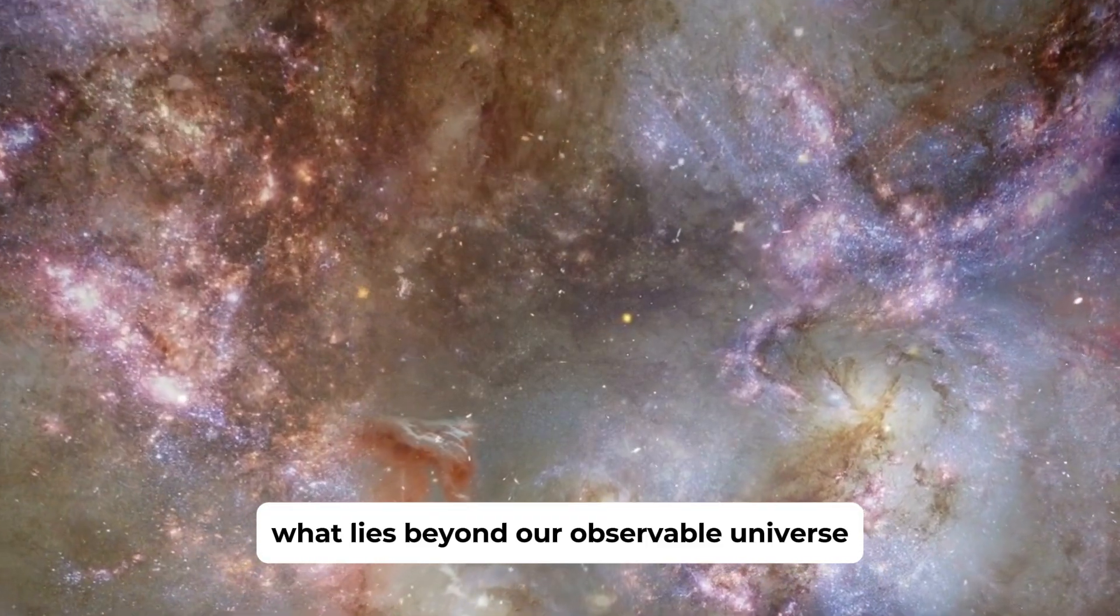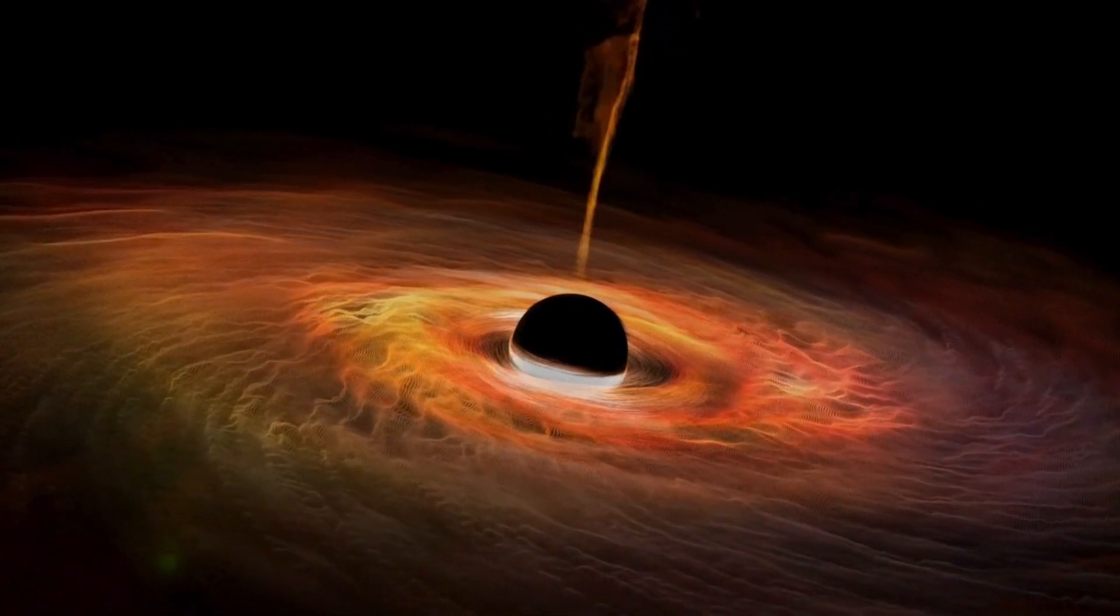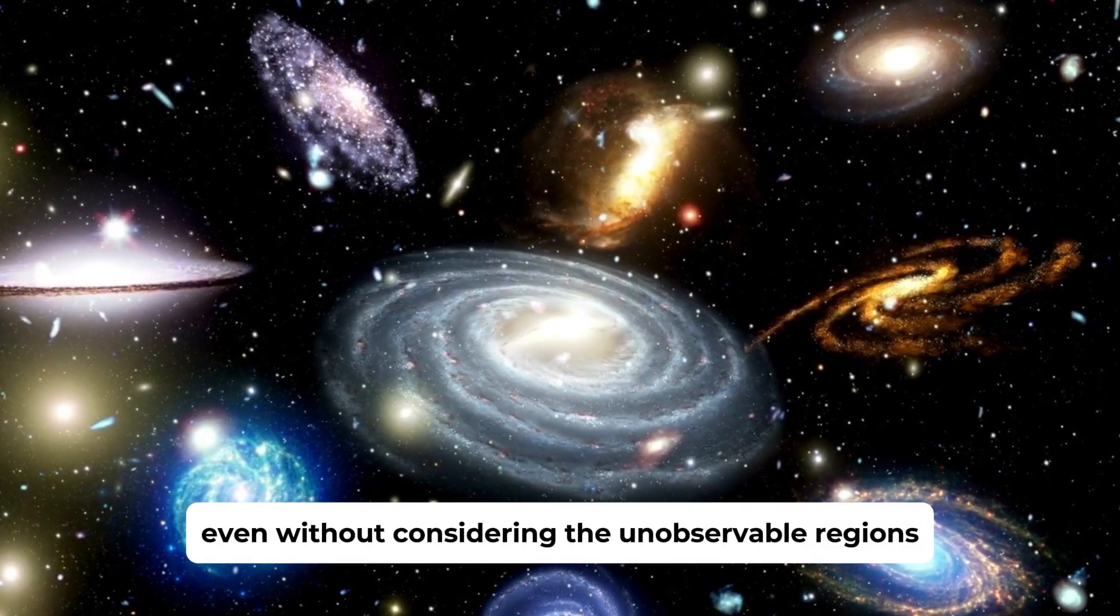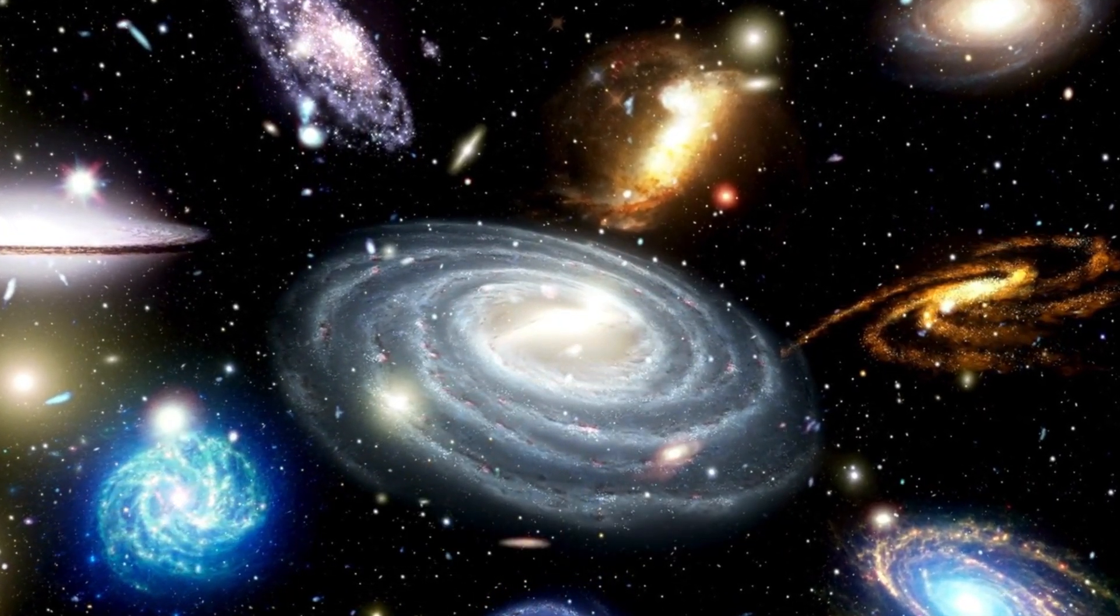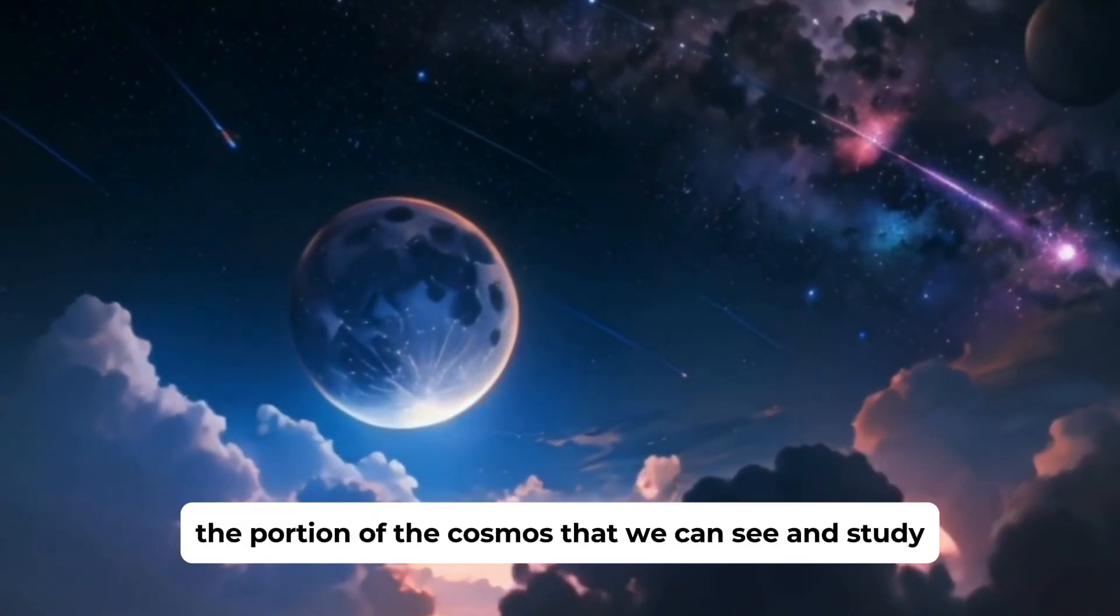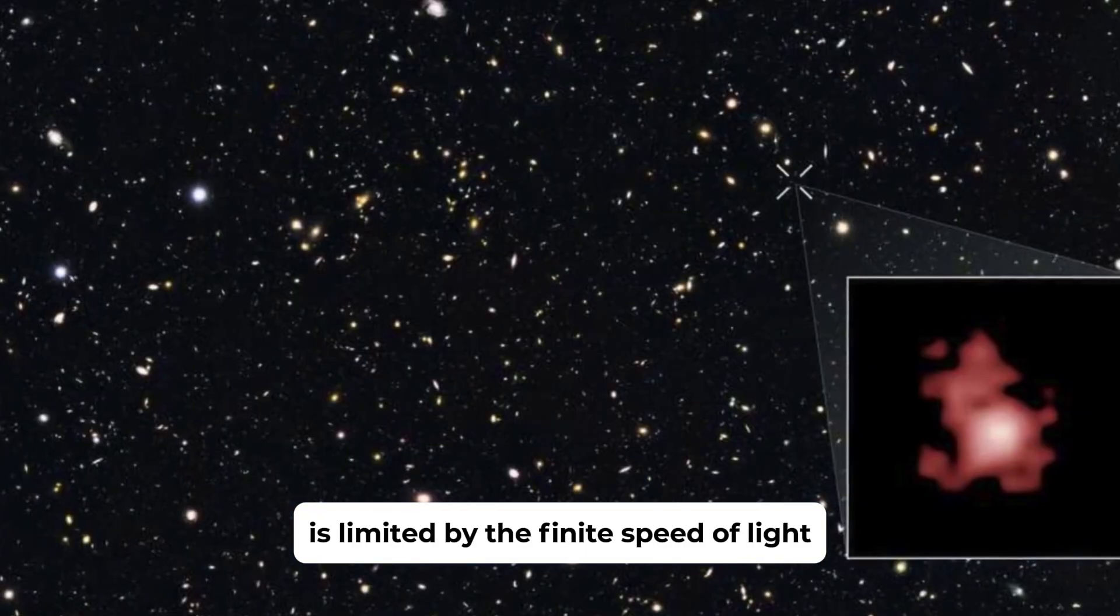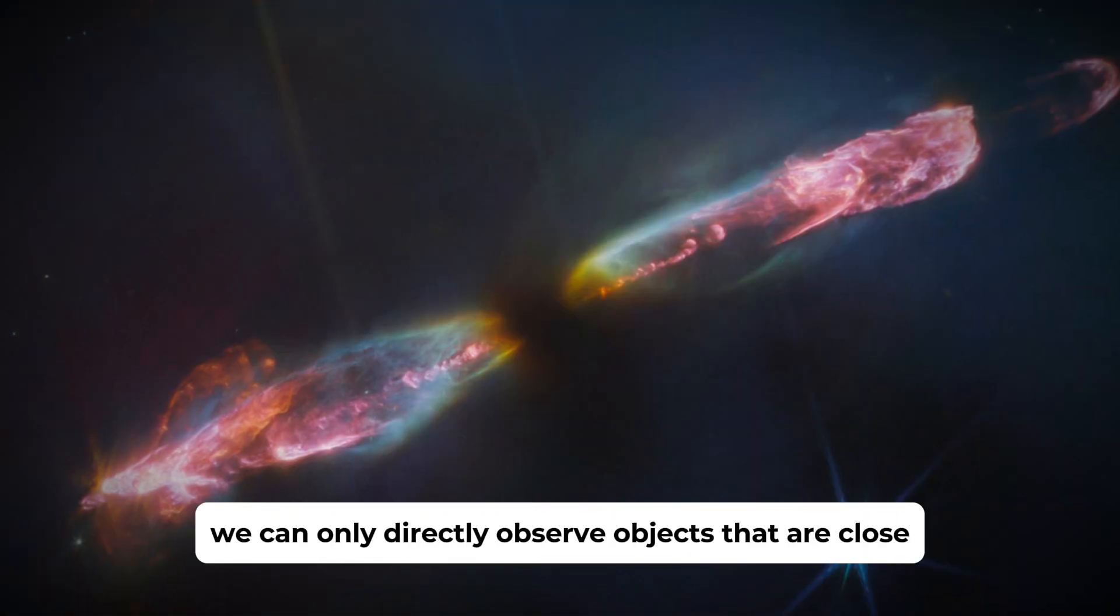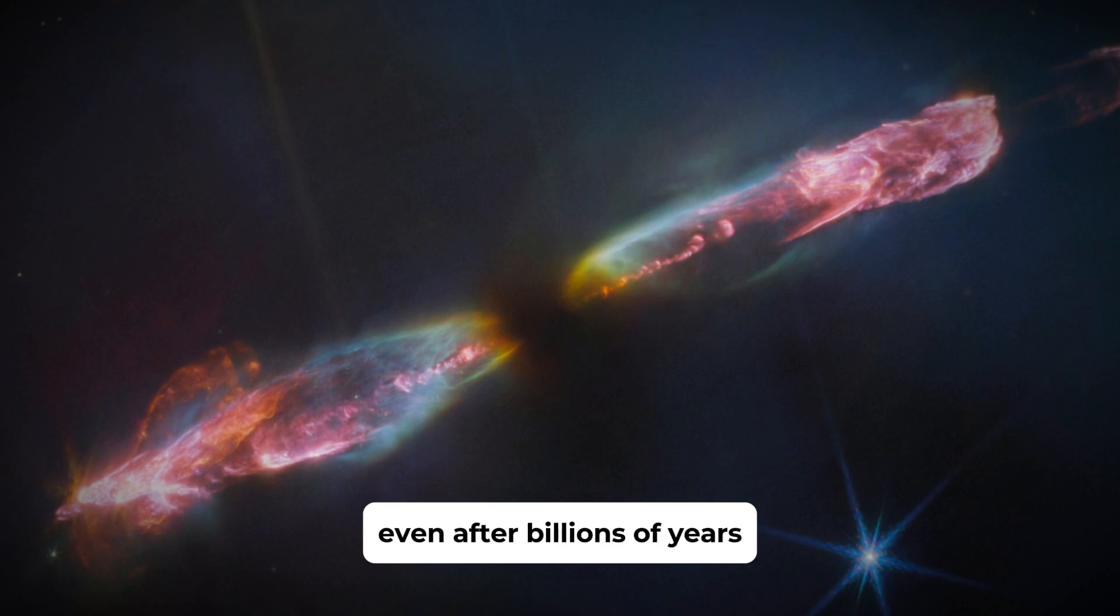The question of what lies beyond our observable universe has confounded humanity for centuries. The cosmos is so vast that even without considering the unobservable regions, astronomers have struggled to estimate its true size. The observable universe is limited by the finite speed of light. This means we can only directly observe objects that are close enough for their light to have reached us, even after billions of years.